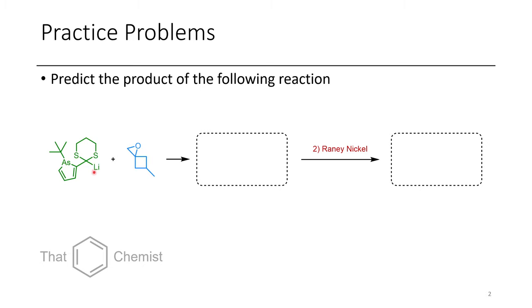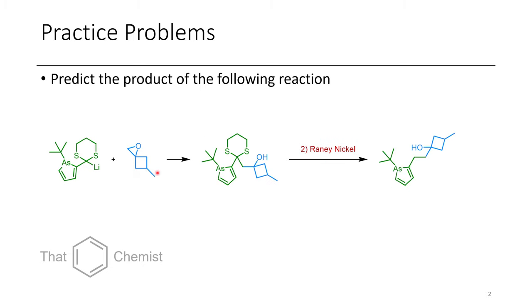In this first question, we have this lithiated dithiane, and we nucleophilically open up an epoxide, forming this tertiary alcohol. Next, we treat this with Raney nickel, which just reduces the dithiane to a CH2, giving us the final product on the right. One of you figured out the joke in this molecule here, and I'd encourage you to look at the pinned comments in the last episode if you didn't get the joke.